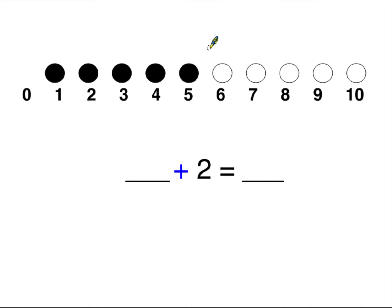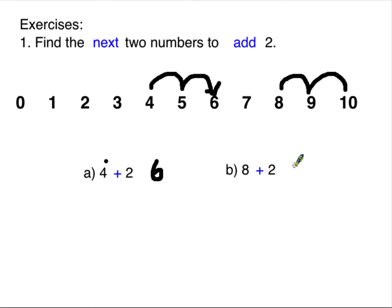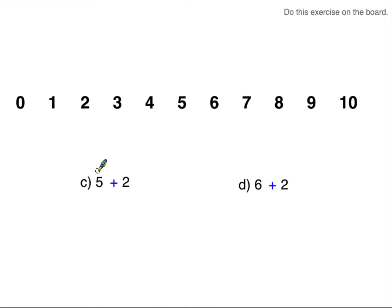We always have to know which number we're starting with. We're starting with the four. Two more than four — one jump, two jumps. Four plus two equals six. Starting with the eight — how many are we going to jump? Two more. One more, two more. Eight plus two, we landed on the ten. Five plus two more: two more than five — one, two — so we're ending up at the seven.